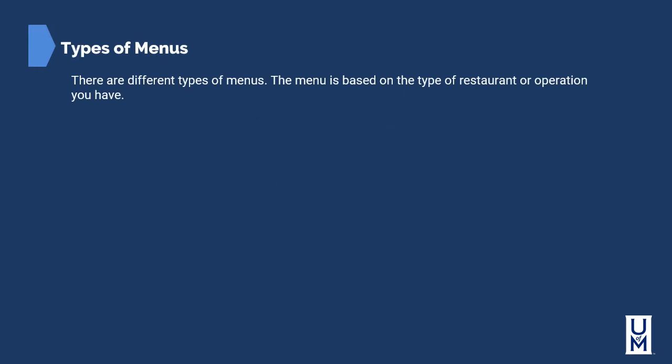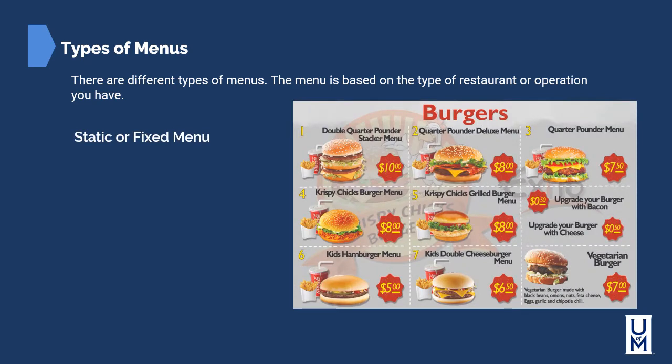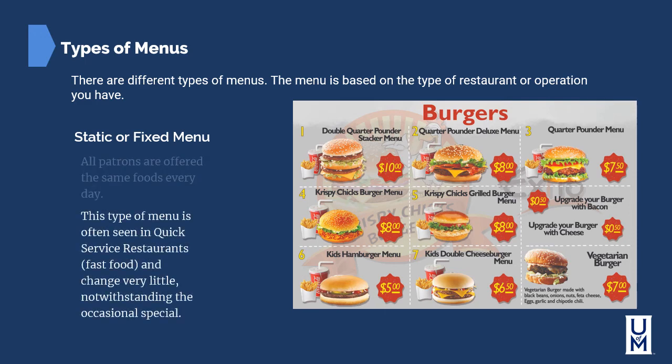There are four different types of menus based on the type of operation you have. The static or fixed menu is typified by items that don't really change much — they stay the same, and very seldom is something new added. All patrons are offered the same food every day. This type of menu is often seen in quick service or fast food restaurants and changes very little, notwithstanding the occasional special.